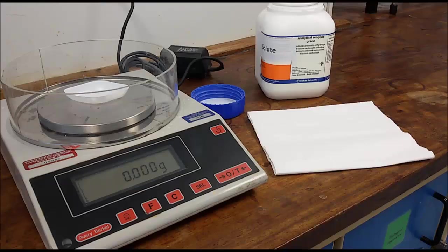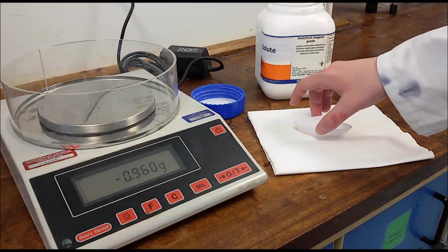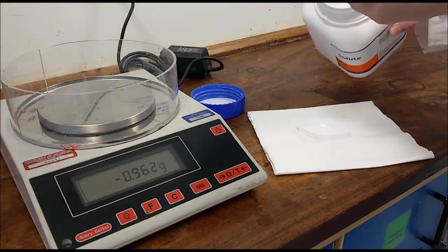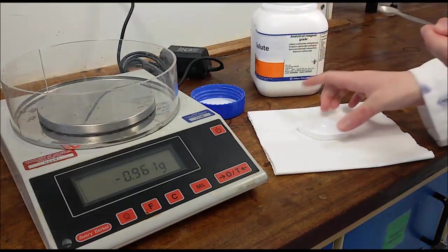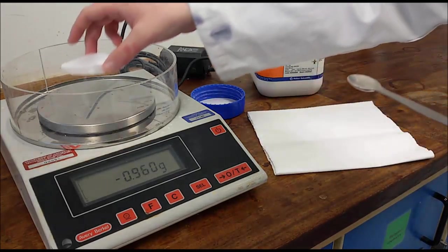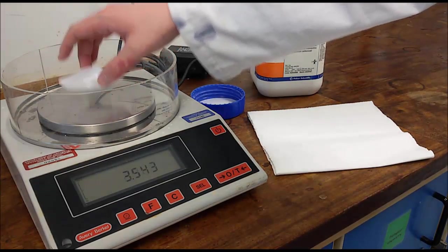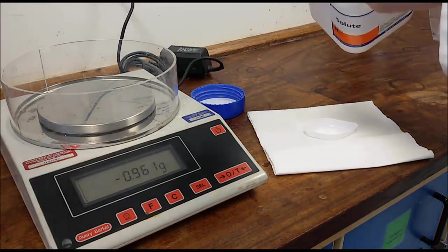Weigh as close as possible to the calculated mass of the solute, taking great care not to exceed the mass significantly, as the solid cannot be put back in the container. To avoid spillage of the solid on the balance, it is convenient to take the boat off the balance, place on a piece of clean paper, add some amount of solute and put the boat back on the balance, repeating this until the right mass is obtained.